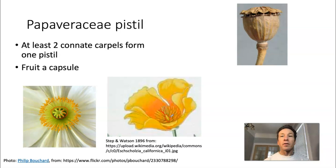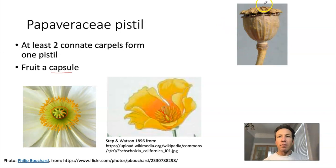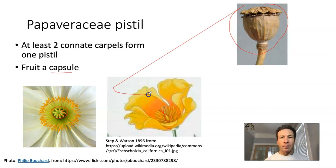The fruit in Papaveraceae is a capsule — a dry, dehiscent fruit that opens and is comprised of multiple carpels. A classic poppy pistil is shown at the top of the slide.